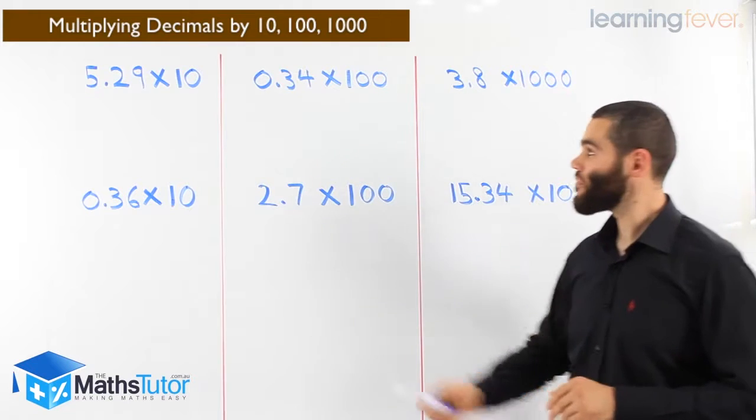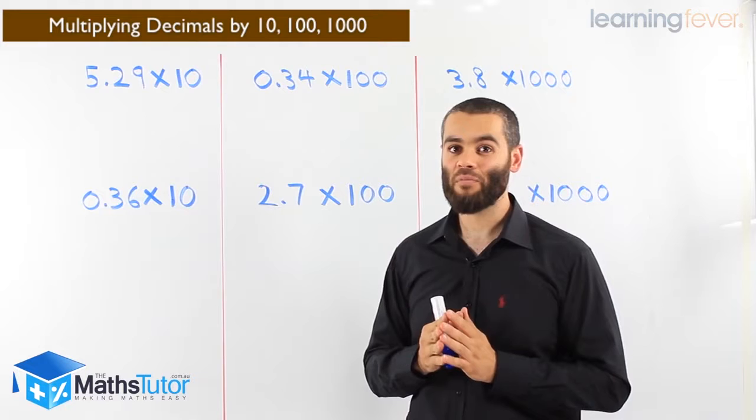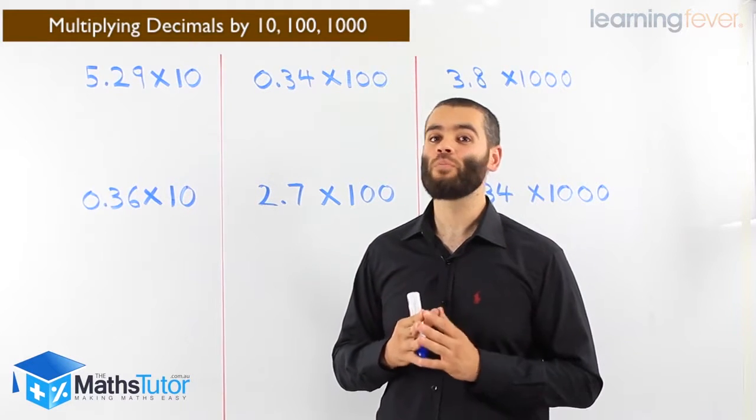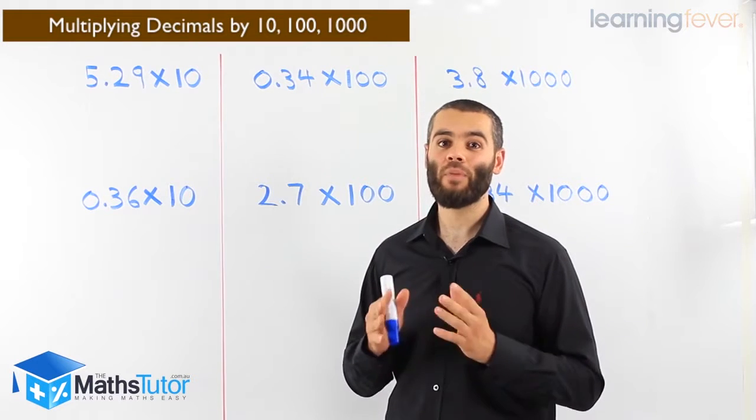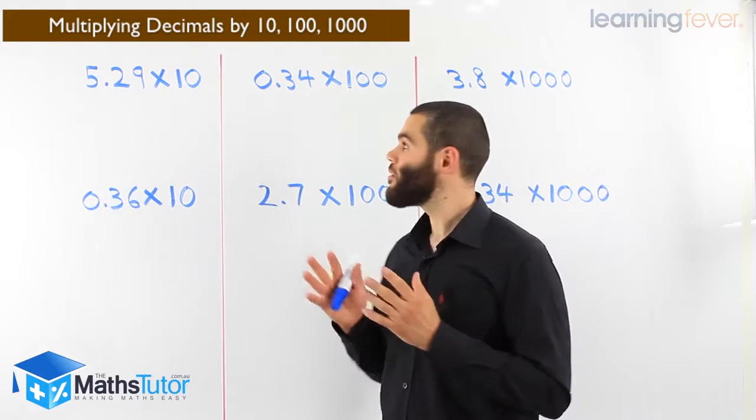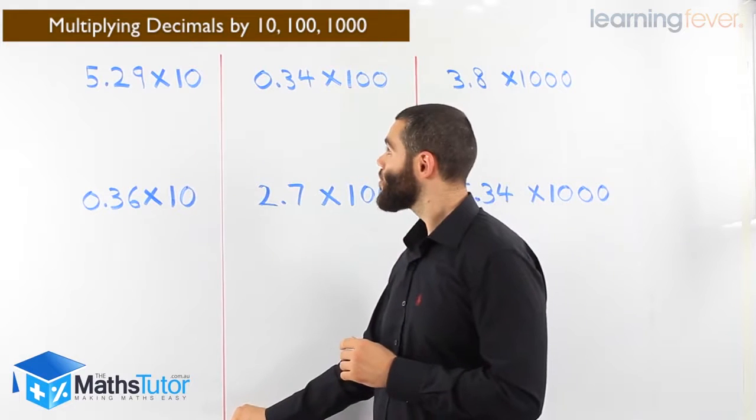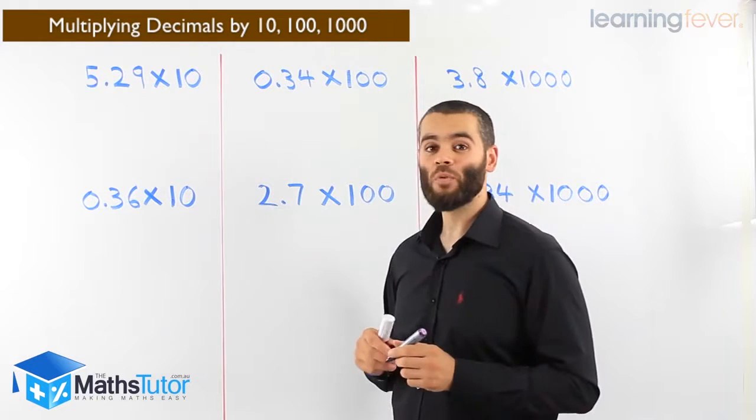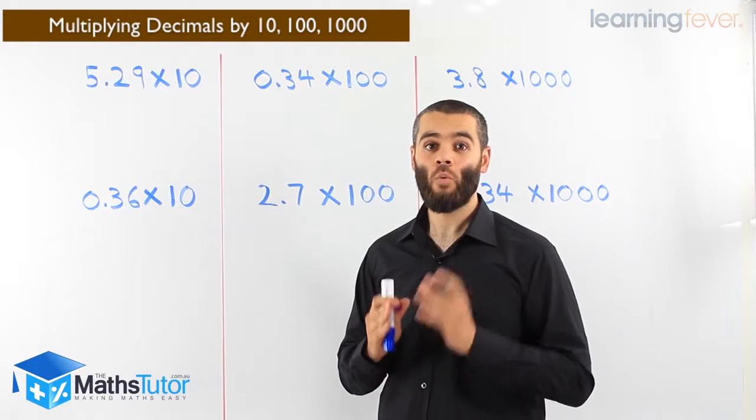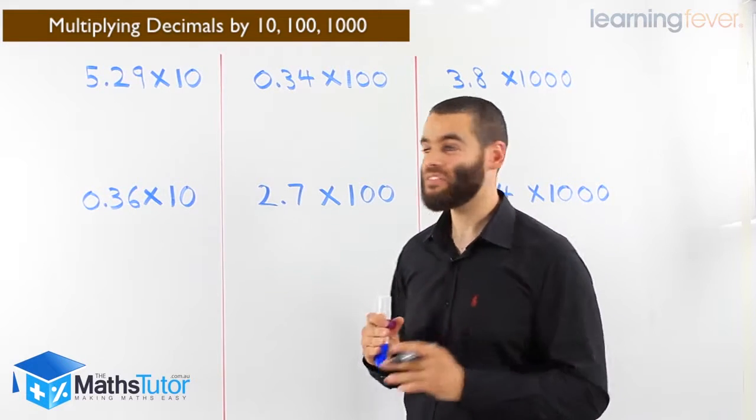We have an example: 5.29 times ten. What we've got to do is look at where the decimal point is. We're multiplying by ten, so we ask ourselves, how many zeros does ten have? We look - ten has, of course, one zero. So we grab the decimal point and we're going to move it once to the right. Why once? Because ten has only one zero.